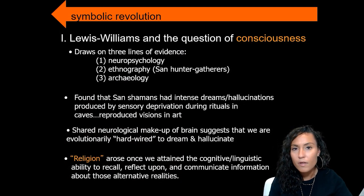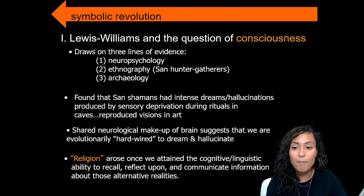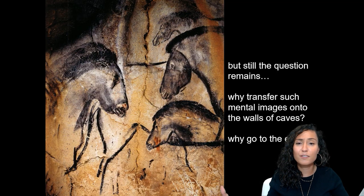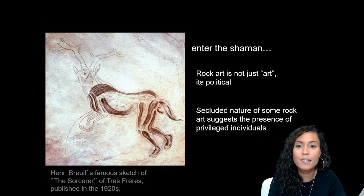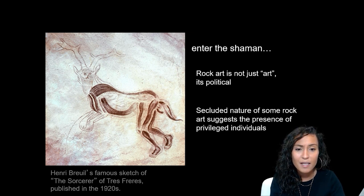According to Lewis-Williams, the act of painting and engraving images in caves or on rocks was intended to evoke supernatural animal spirits. But why transfer mental images onto cave walls at all? While some Paleolithic rock art appears in visible, easily accessible areas, most is found in small niches or chambers accessible only through long journeys. The secluded nature of these images suggests they were part of a solitary practice meant only for privileged individuals — specifically priests or shamans.